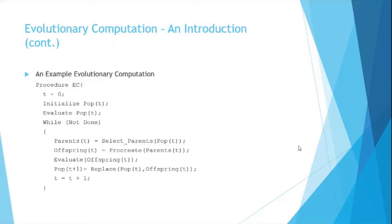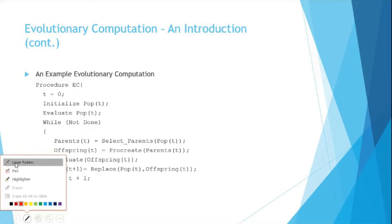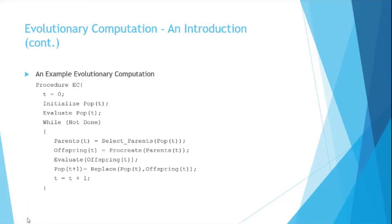An example of evolutionary computation is given — a pseudocode for this procedure. At time t equal to zero we initialize a population. A population is a set of candidate solutions. For example with x and y, the pair (1, 2) is a candidate solution where 1 is the value for x and 2 is the value for y.